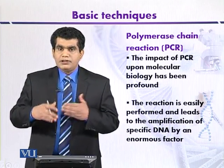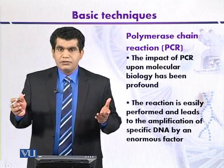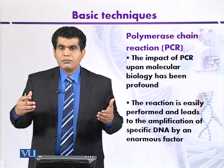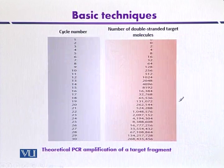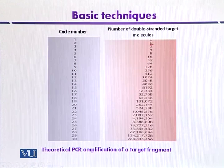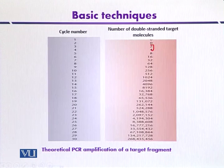It has great application in the field of gene manipulation, where we can get a number of copies of our target sequences. This diagram shows theoretical PCR amplification of a target fragment. Suppose we have one or two fragments at the start, and from these fragments, after repeated cycles of denaturation, annealing, and extension — after 30 cycles, which may take two to three hours — at the end we may have millions of copies of the target DNA.